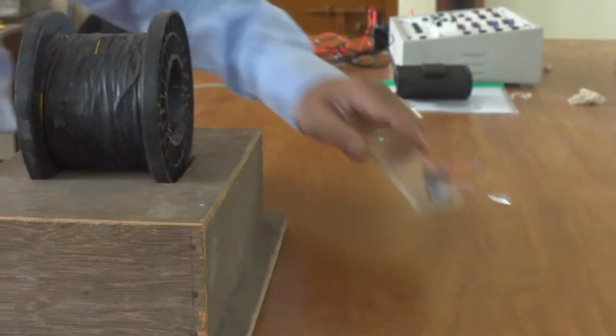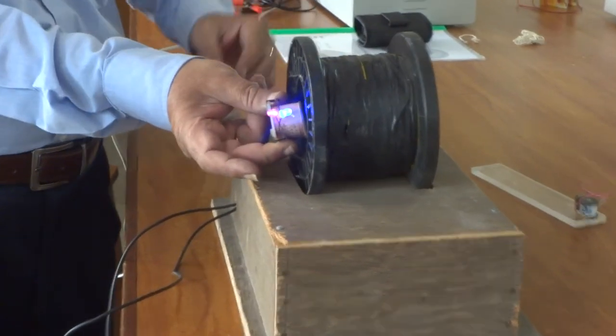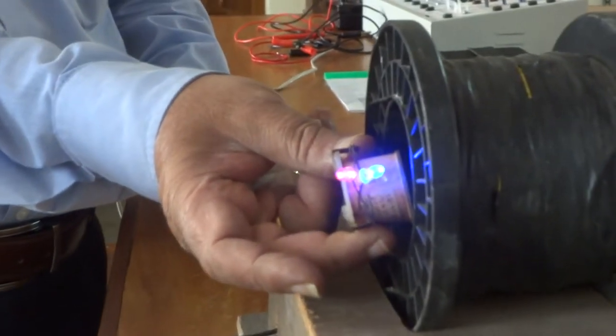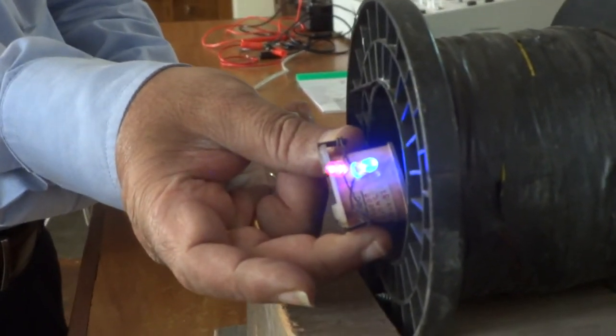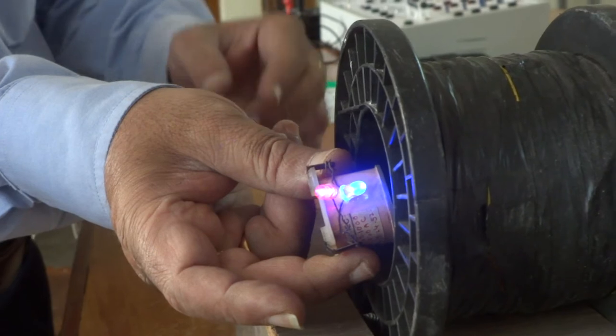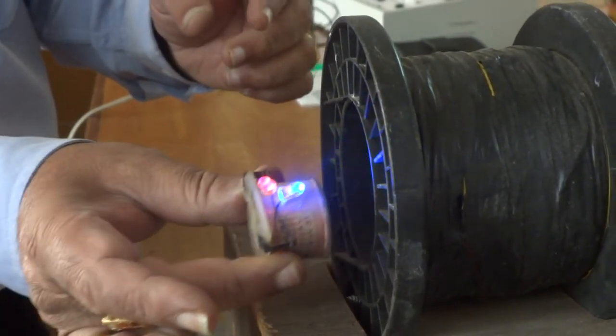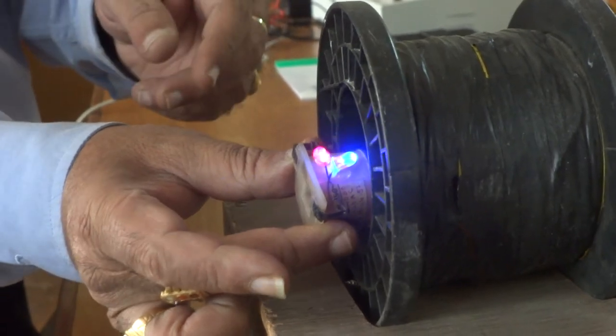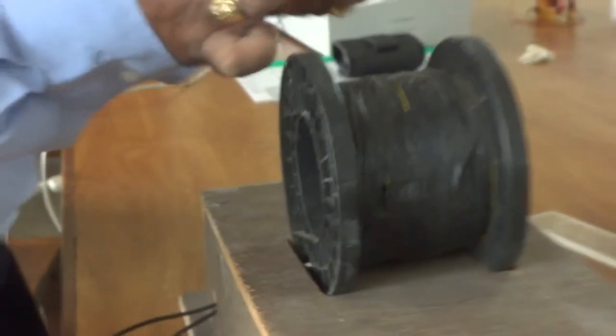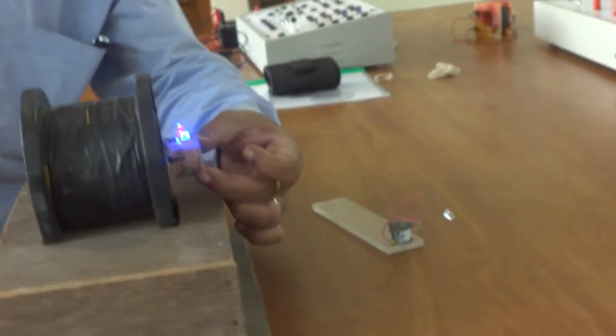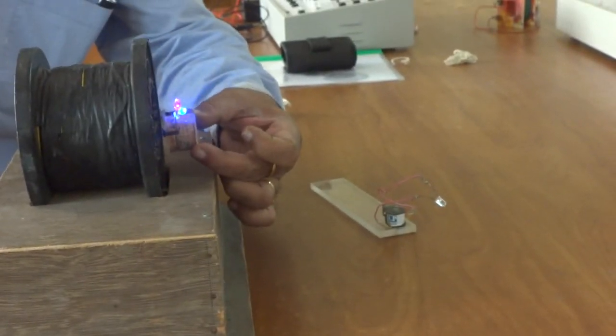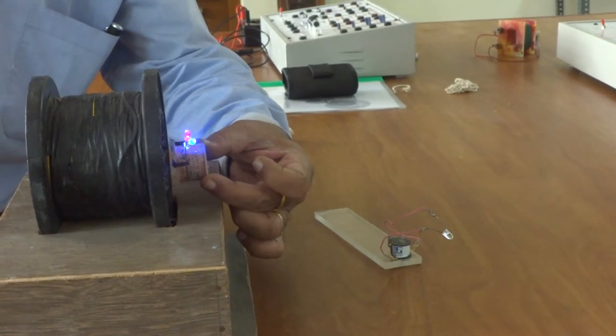Now this secondary coil, I will replace it. You can see that two LEDs are glowing. This secondary coil is not in contact with any electrical connections. So here it is purely because of electromagnetic induction, or you can say mutual induction.